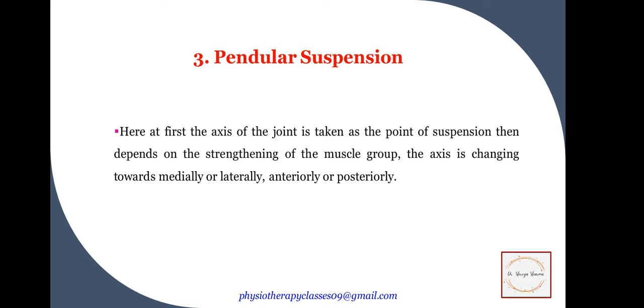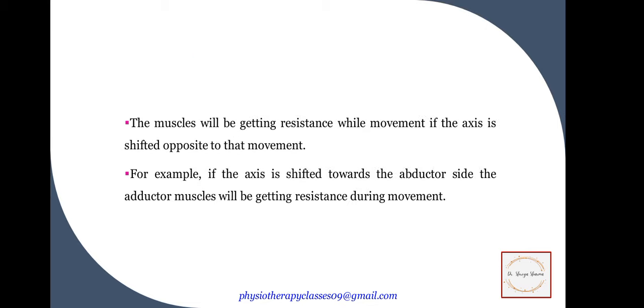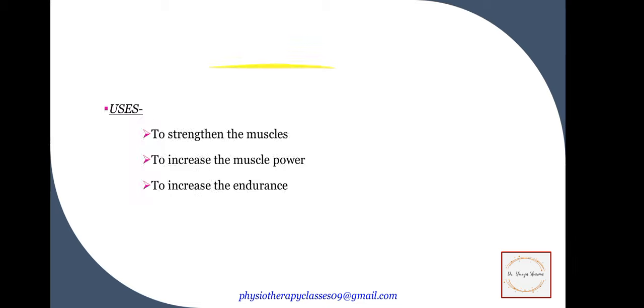The third type is pendular suspension. The axis of the joint is taken as the point of suspension, then depending on the muscle group being strengthened, the axis is shifted medially, laterally, anteriorly, or posteriorly. The muscle will get resistance while moving if the axis is shifted opposite to that movement. For example, if the axis is shifted towards the abductor side, the adductor muscle will get resistance during movement. This is used for strengthening, increasing muscle power, and increasing endurance.